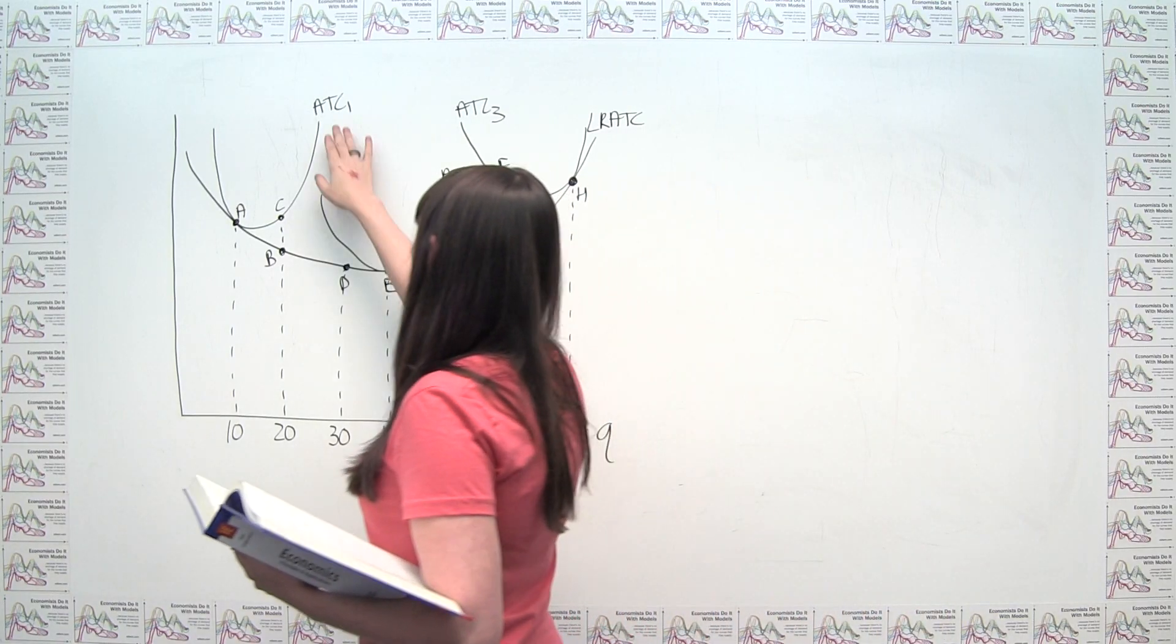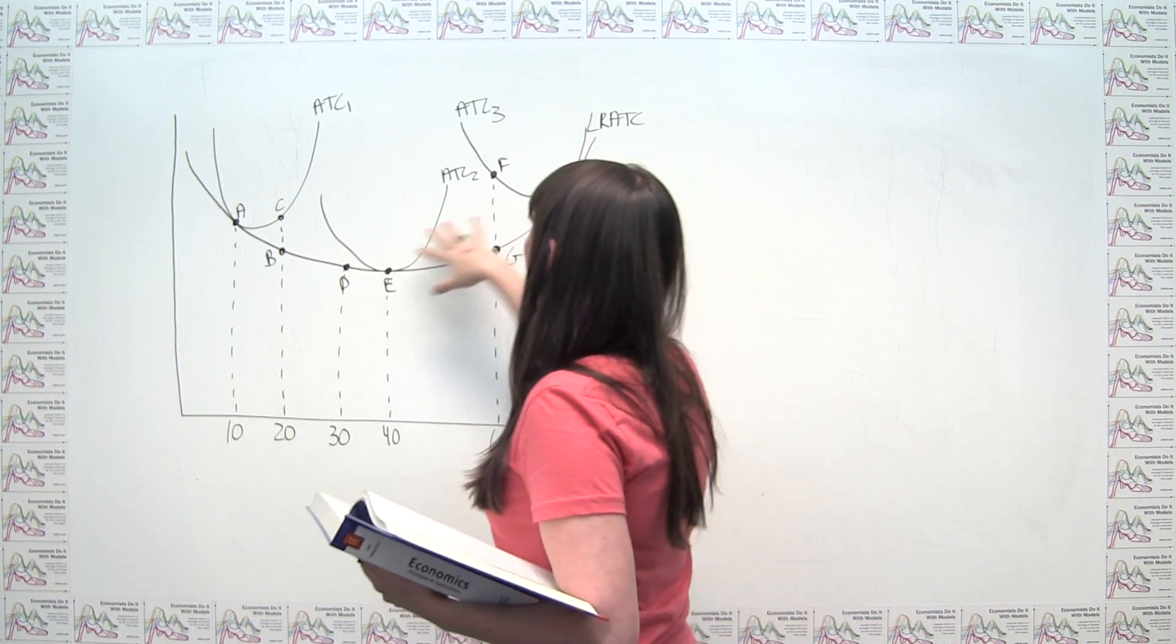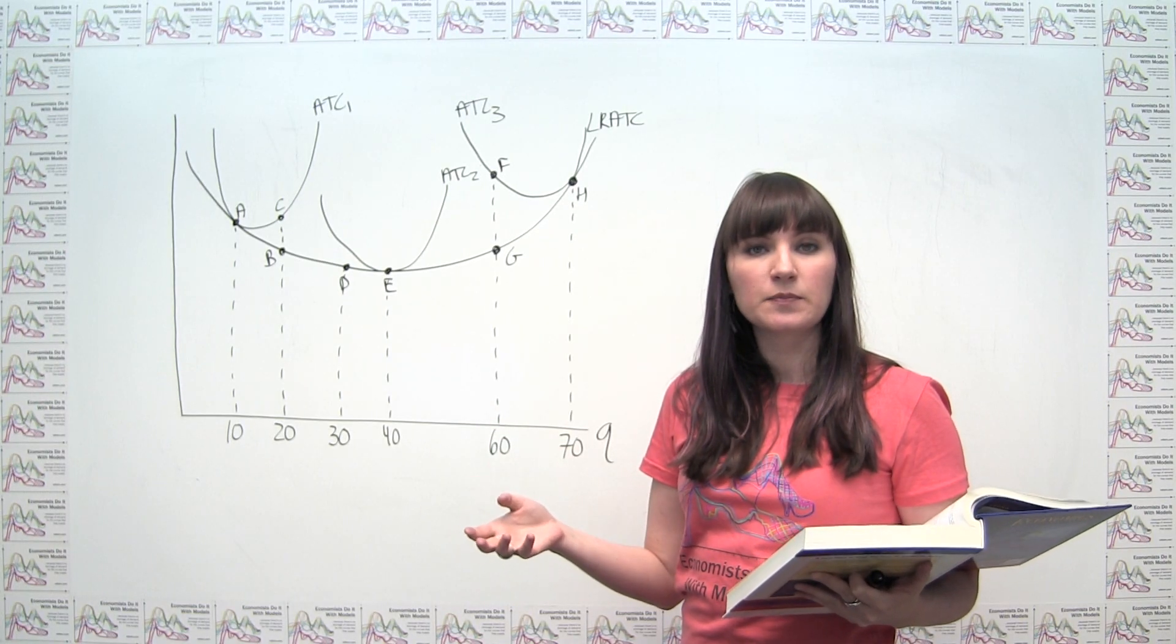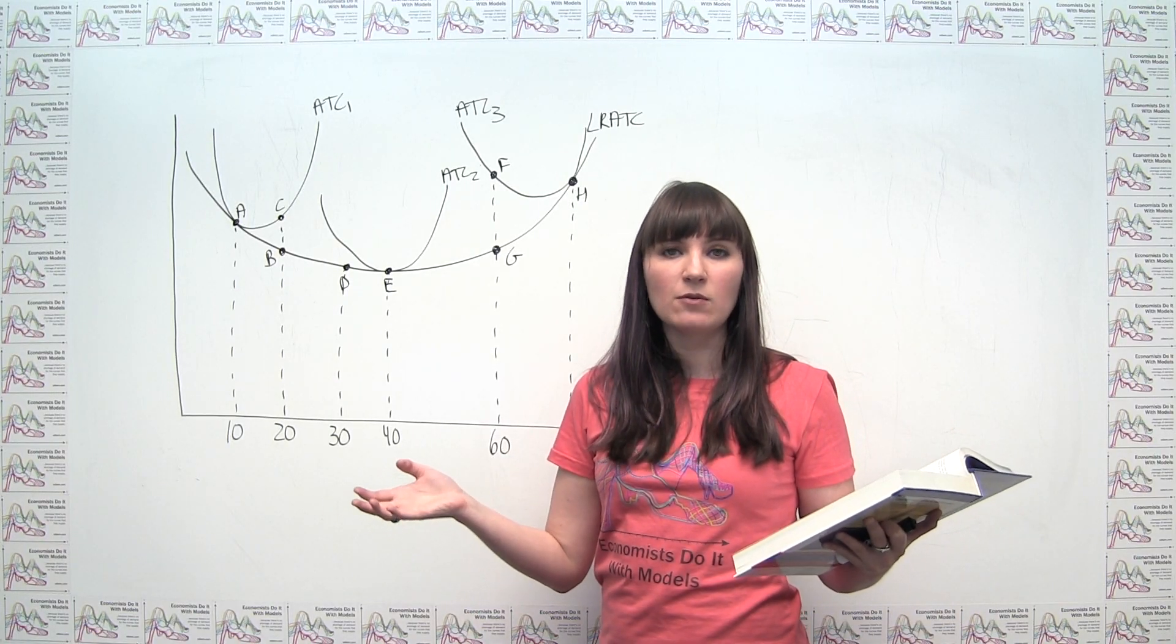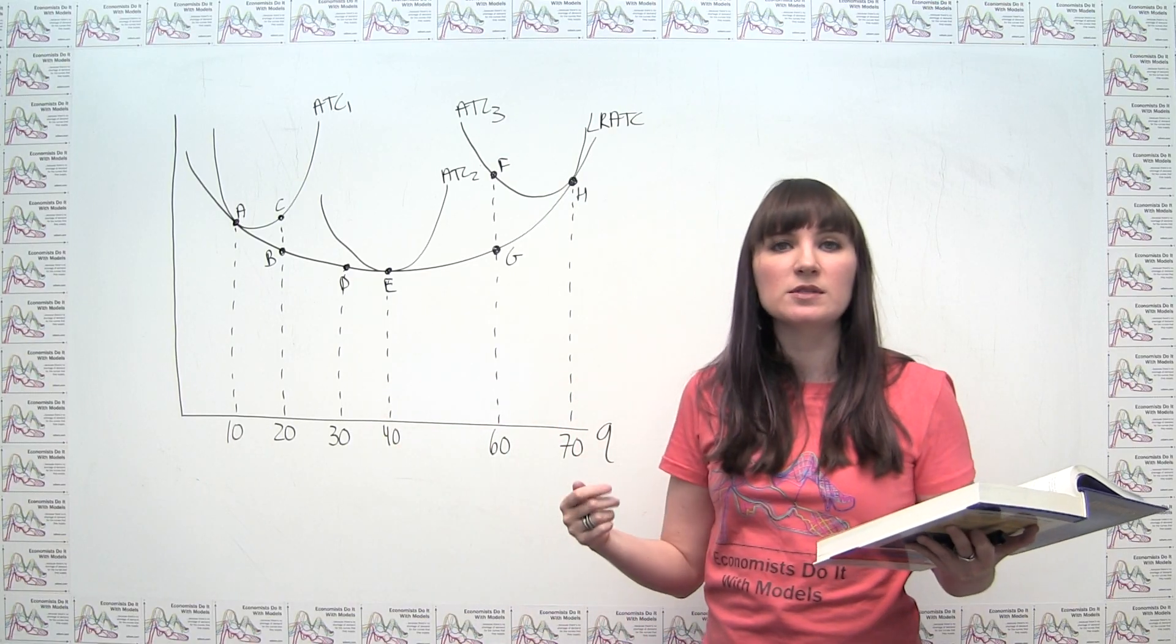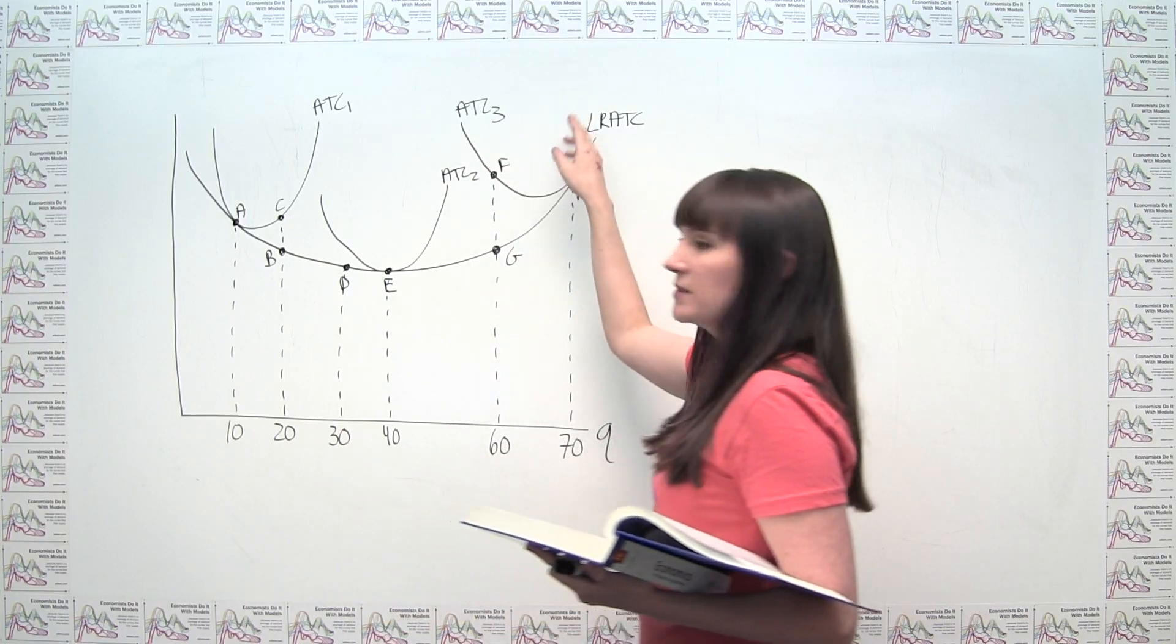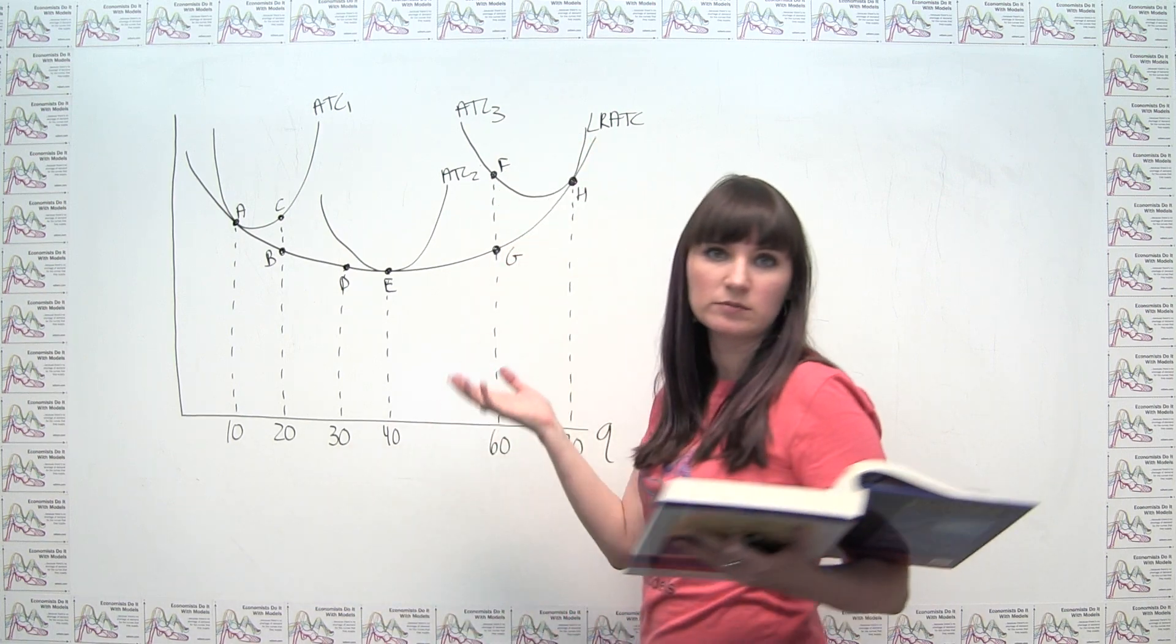So you'll see that we have curves that are labeled ATC1, ATC2, and ATC3. And what these are is they represent short run average cost curves for various different sizes of factories. Because we said in the short run, we've basically chosen a size of plant or factory. And we're trying to figure out how to get more output out of that by changing the variable inputs that we have left, usually just labor. So we have less flexibility in the short run. And each one of these curves corresponds to a different size of plant.